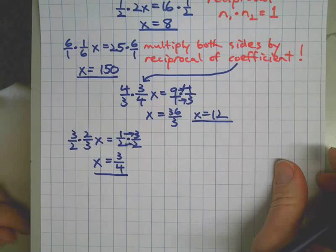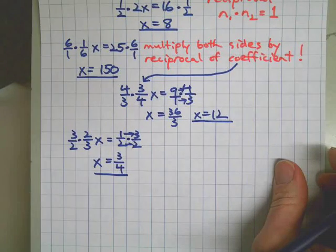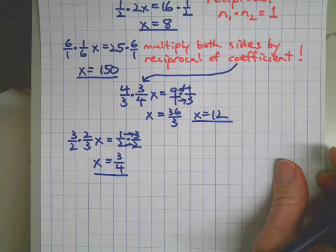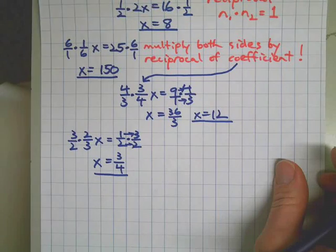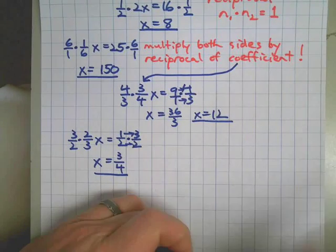What do you do? Multiply both sides by the reciprocal of the coefficient. Good job!